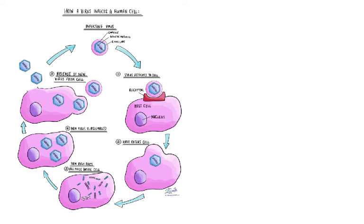How does a virus infect a human cell? The virus attaches to the cell — there is usually a receptor on the cell, which is why viruses are specific. For example, the hepatitis virus only affects liver cells. The virus fits the receptor just like a lock and key. Then the virus enters the cell, takes it over, and hijacks it, causing new virus parts — protein coat and DNA copies — to be made. Many virus particles are assembled and released from the cell, sometimes killing it.